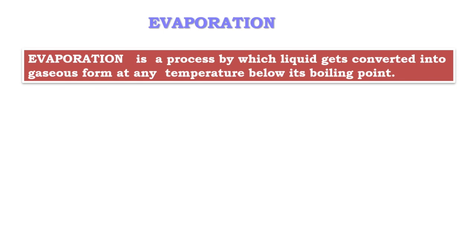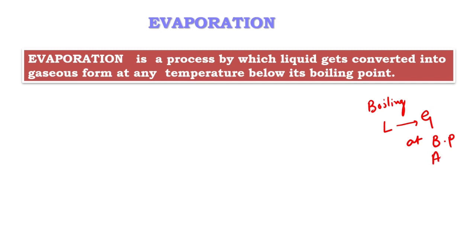But then what is the difference between evaporation and boiling? First we will try to recap the boiling process. In boiling, the liquid form converts into the gaseous form. But here we have two conditions: at boiling point and atmospheric pressure.